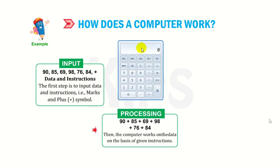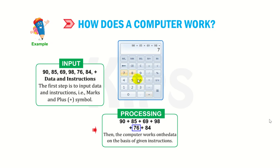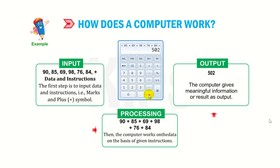Then the computer works on the data on the basis of given instructions: 90 + 85 + 69 + 98 + 76 + 84. In the end, the computer gives meaningful information and the result, which will be 502.